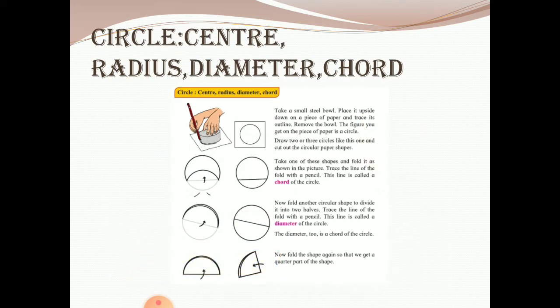Now when we concentrate on circle, we see that there are four parts of a circle: center, radius, diameter, and a chord.